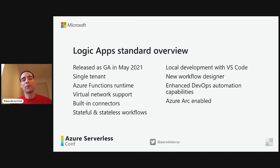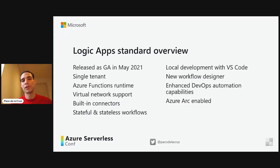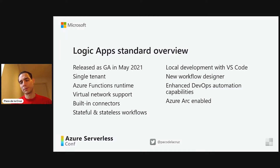On top of that, you get local development with VS Code, so you can develop your workflows, call your built-in connectors, and debug all locally without needing to connect to Azure. If you need to connect to Azure Managed Connectors, you can always do that from VS Code. With Logic Apps Standard we also got a new workflow designer. One of the key differentiations is enhanced DevOps automation, so you can very easily parameterize your workflows to be deployed to multiple environments — from development to integration testing to user acceptance testing all the way to production. Logic Apps Standard workflows can also be deployed to Azure Arc, meaning you can run Logic Apps workflows on-premises or on different clouds.